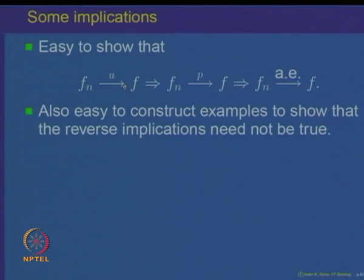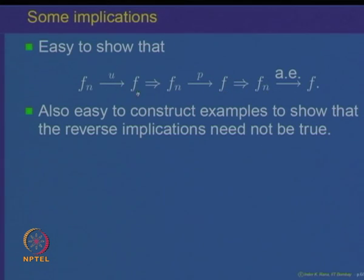As pointed out earlier, F_n converges to F uniformly implies F_n converges to F pointwise, and that implies F_n converges to F almost everywhere, and none of the backward implications is true. One can easily construct counterexamples to show that convergence almost everywhere need not imply uniform convergence. However, we would like to analyze whether some conclusions can be drawn from pointwise or almost everywhere convergence in terms of uniform convergence.